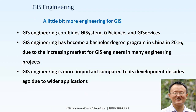Now we can talk about GIS engineering. In the big data context, we can have a little bit more engineering for GIS. GIS engineering combines GIS system perspective, GIS science, and GIS service. So in 2016, in China, we proposed to prepare GIS engineering as a special degree program, and it was approved by the Department of Education. This is due to the increasing market for GIS engineers in many engineering projects.